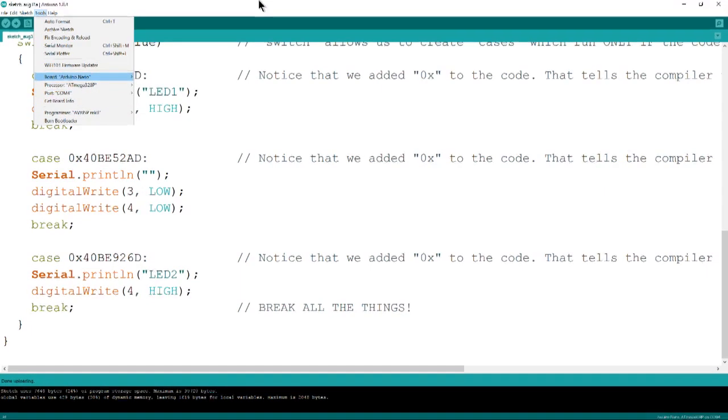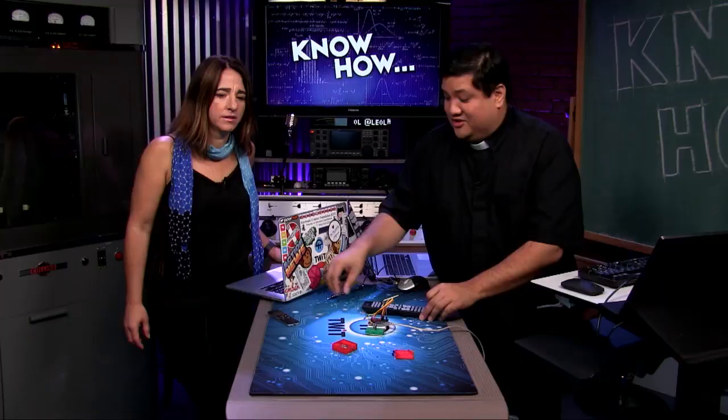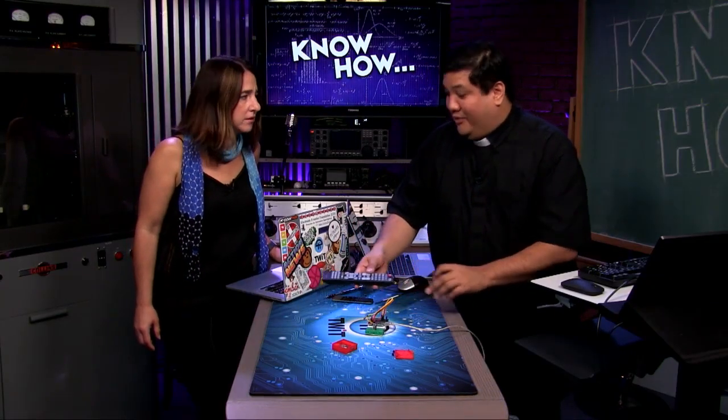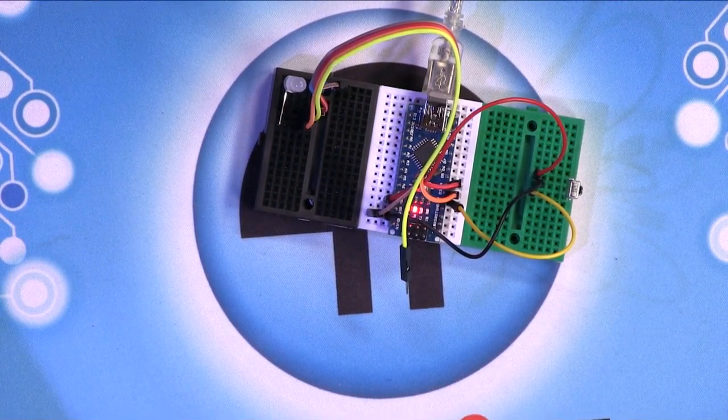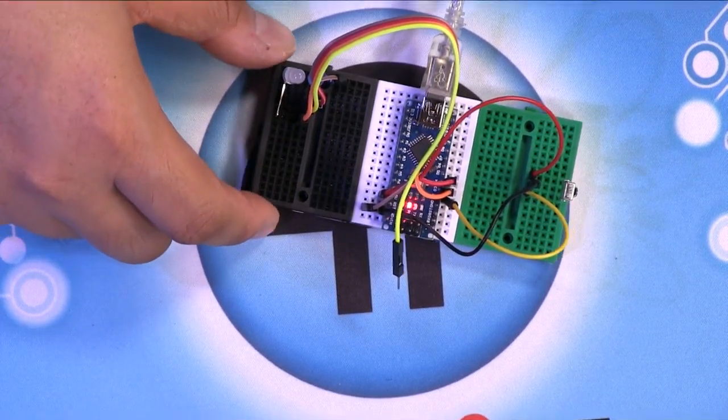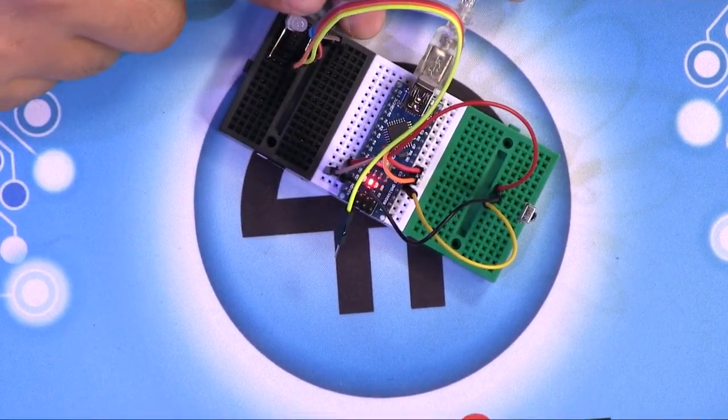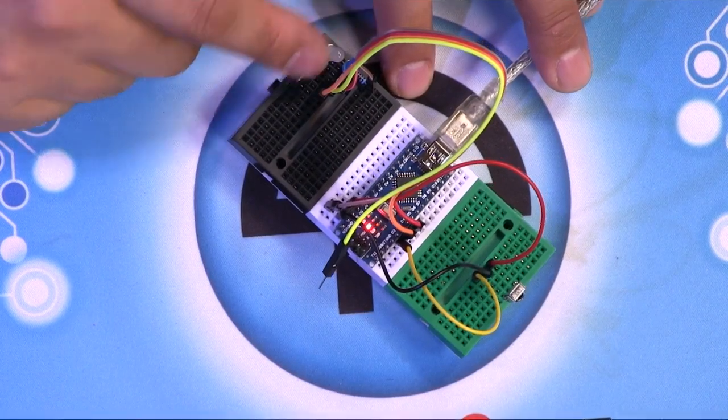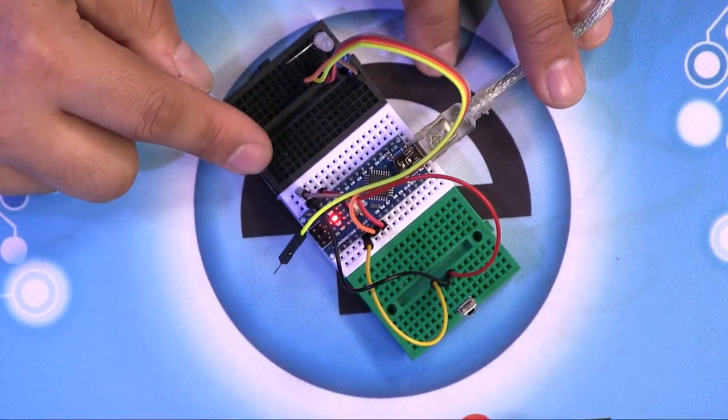So if this is working, these LEDs are going to light up and turn off based on what Megan pushes. OK. So the receiver's over here. Oh, OK. OK, go ahead.